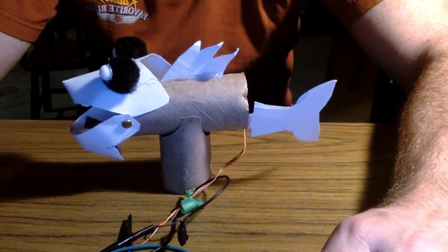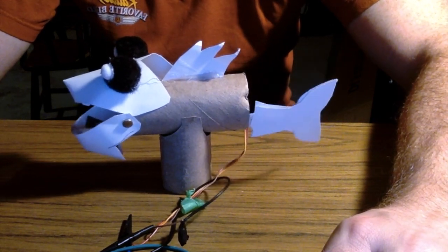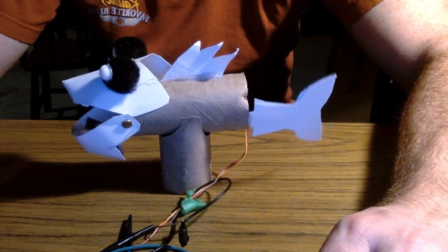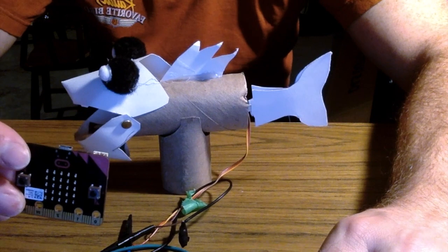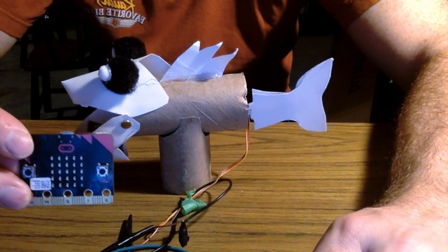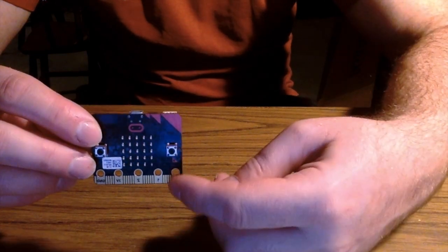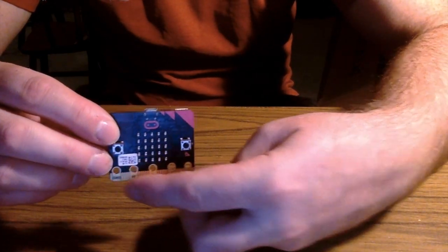I really like the micro:bit because there's so many different things you can hook up to it. On the micro:bit there's these pins down at the bottom, and you can connect different components to them and then actually code those components and control them with the micro:bit. You can do a lot of really neat things with that.